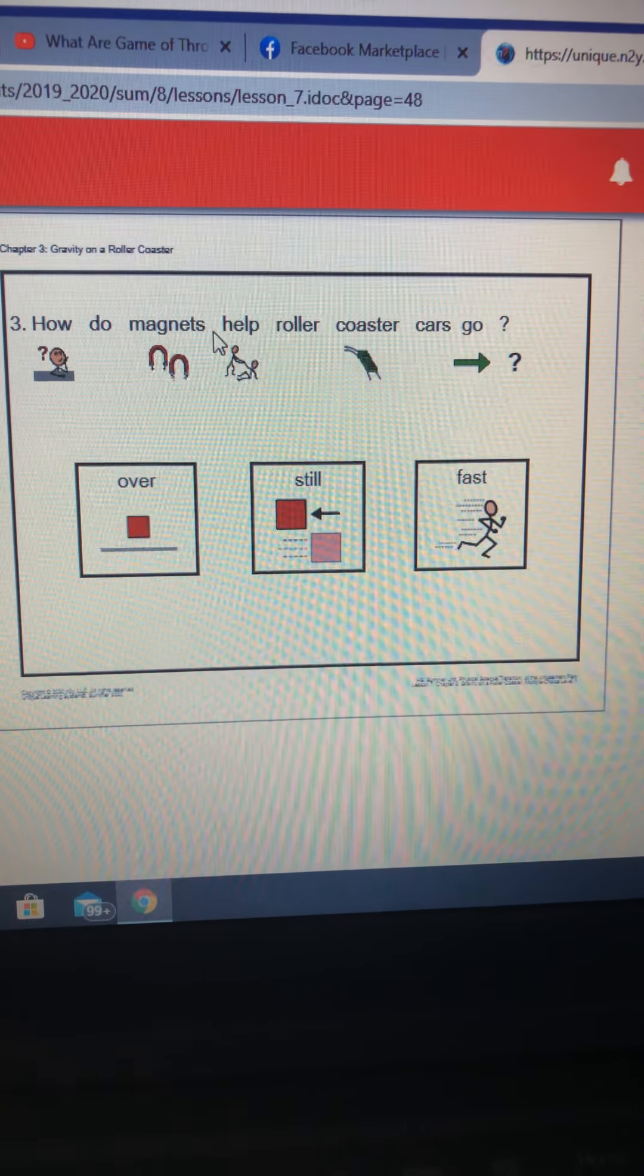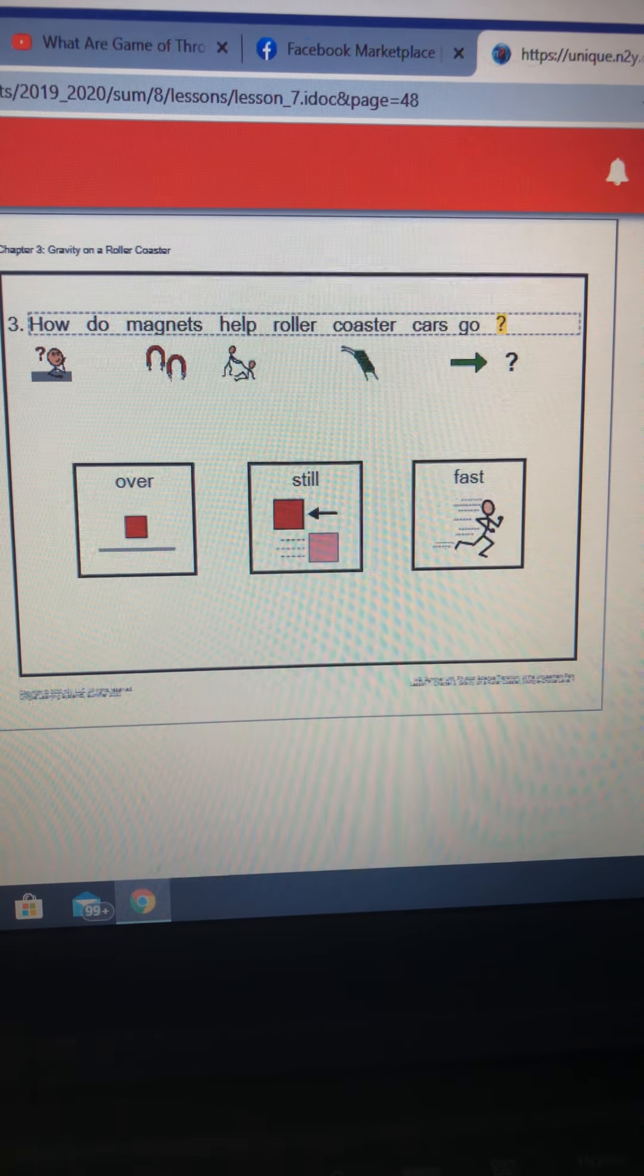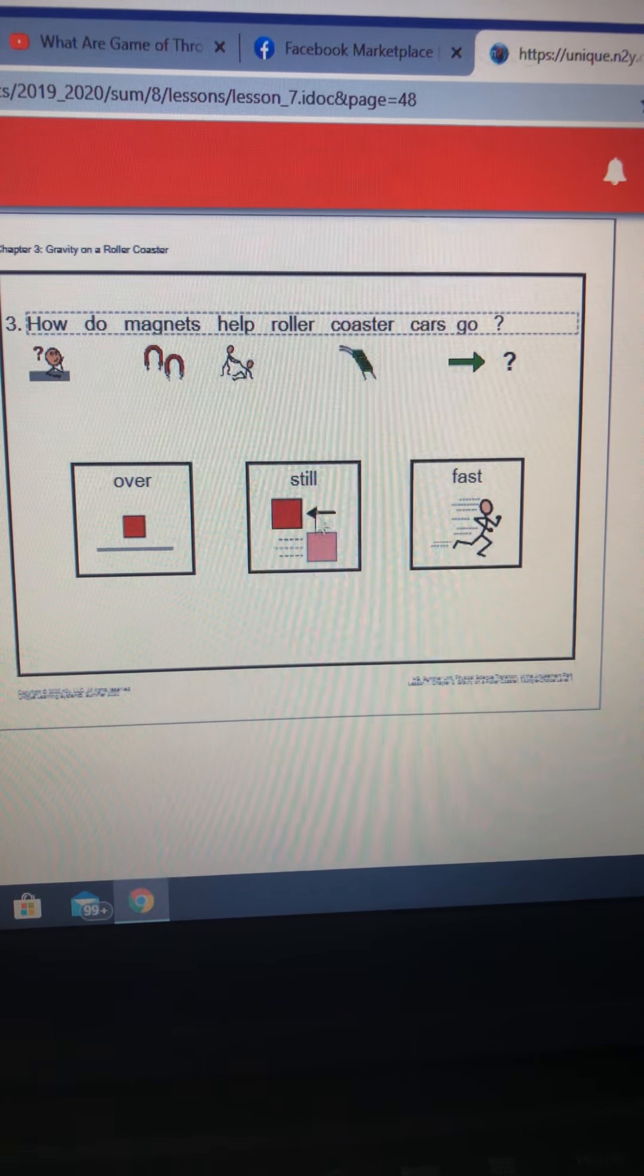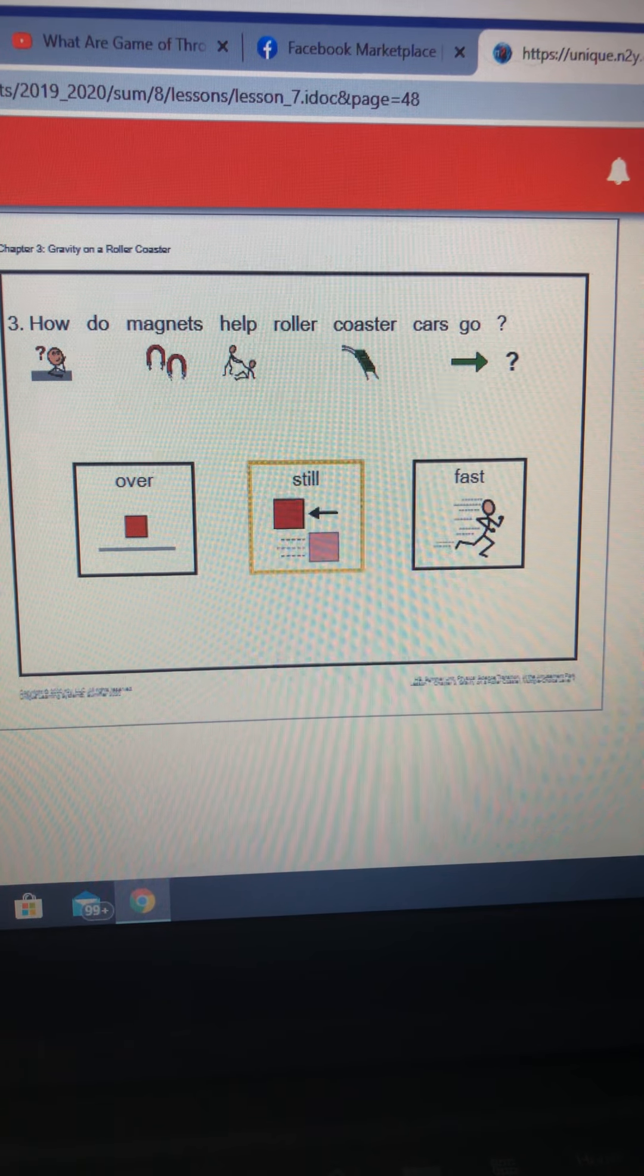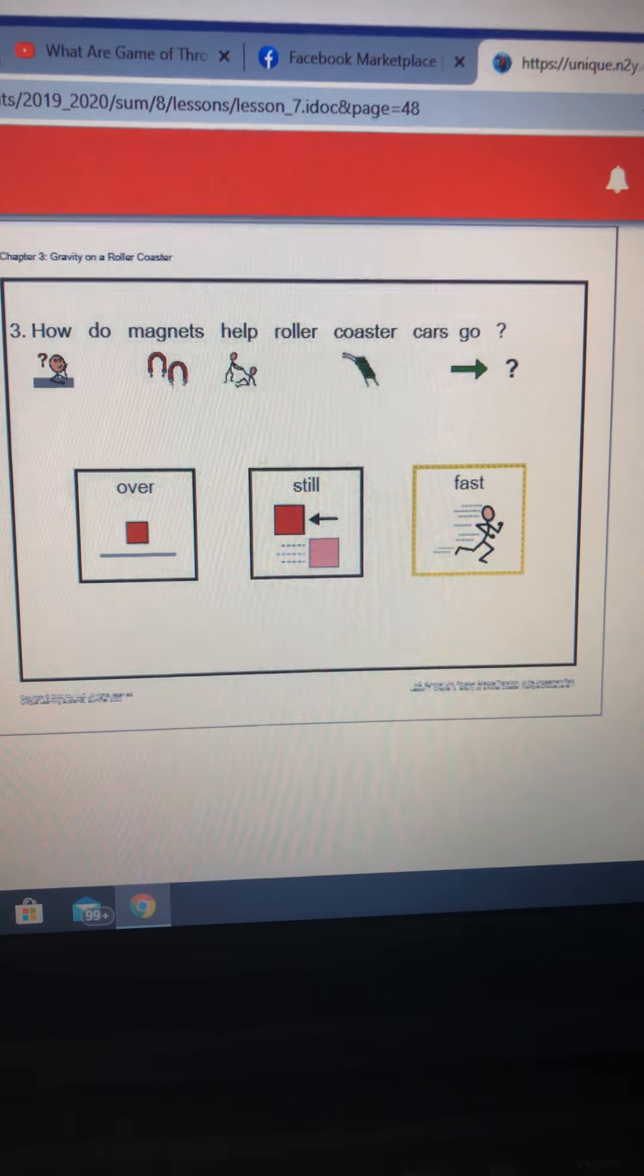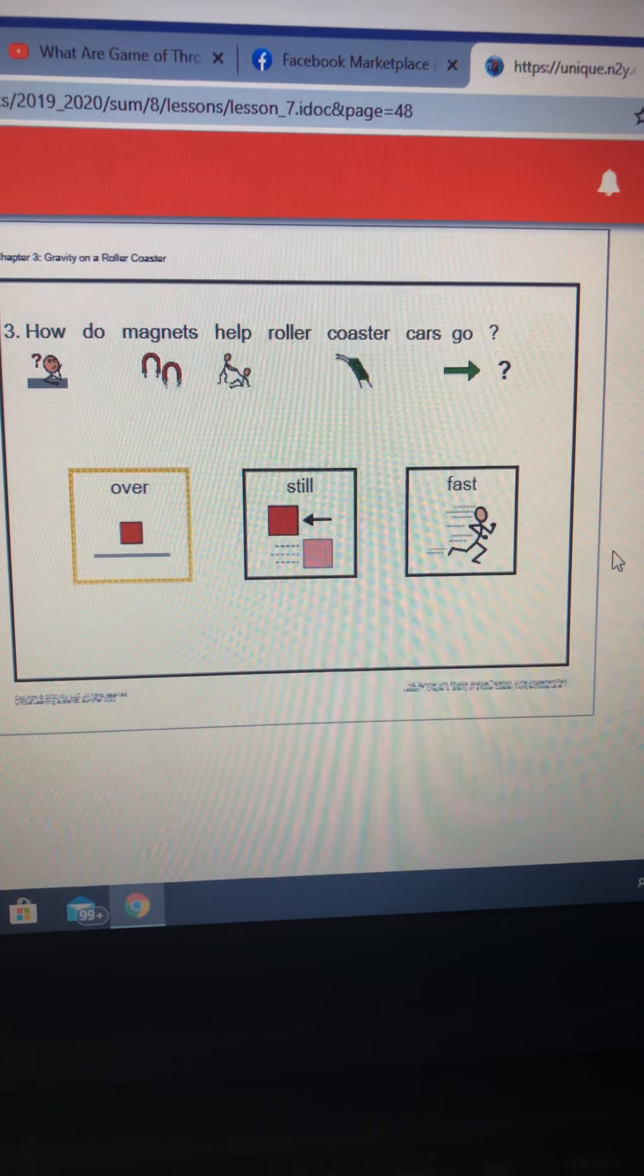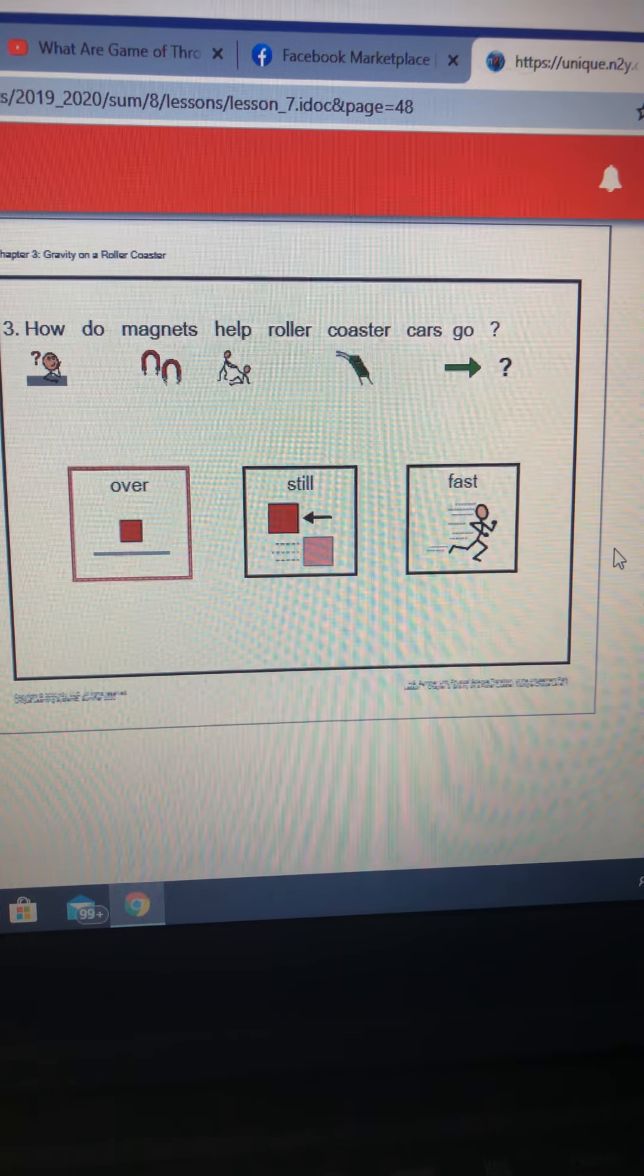Number three. How do magnets help roller coaster cars go? Still. Mm-mm. Fast. Right. Over. Oh no.